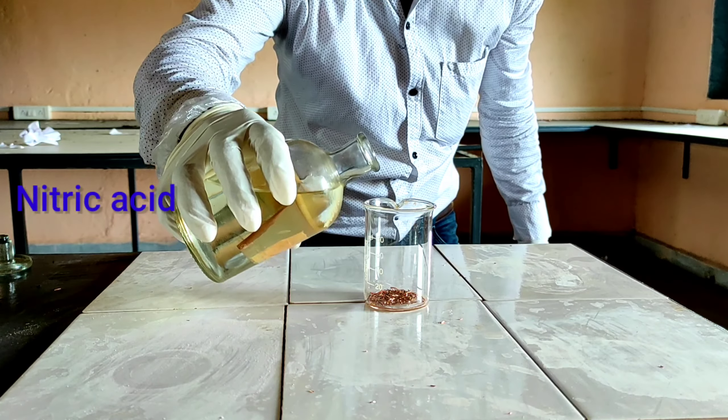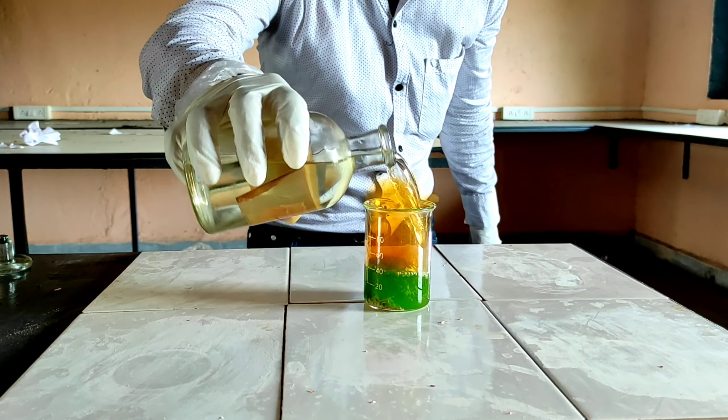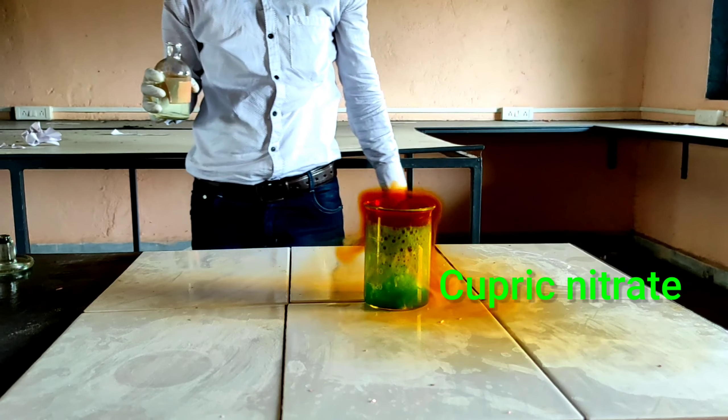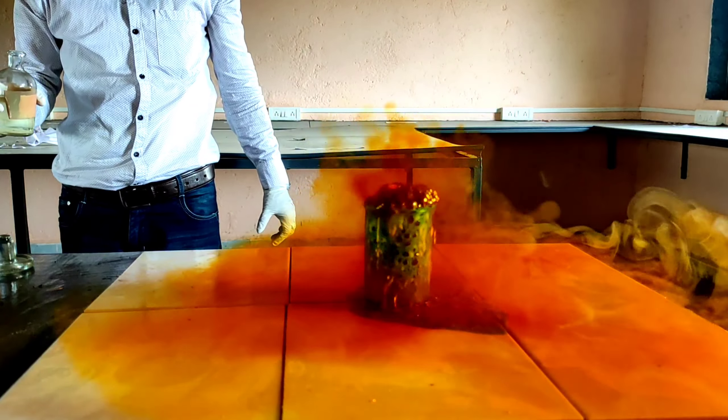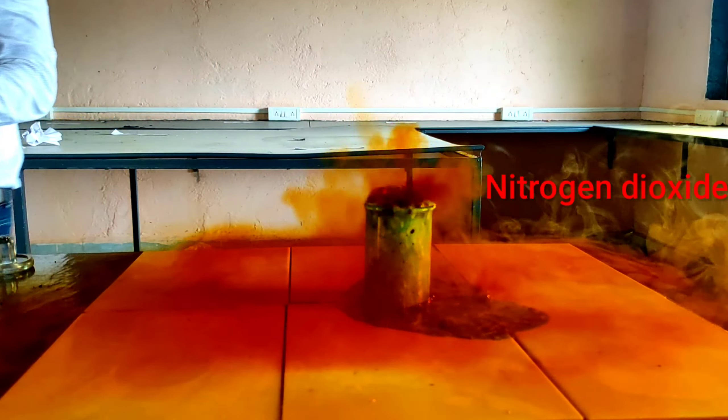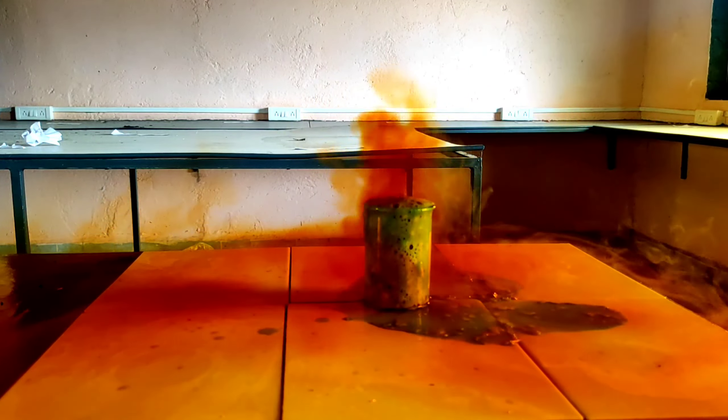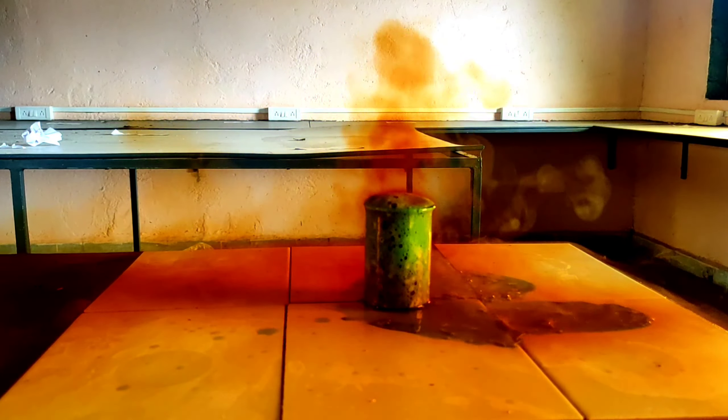When we add concentrated nitric acid solution to copper metal, we get to see deep blue color solution, which is cupric nitrate. And on the top, we get to see the gas, which is nitrogen dioxide, which is very harmful, and in this water molecules also form.